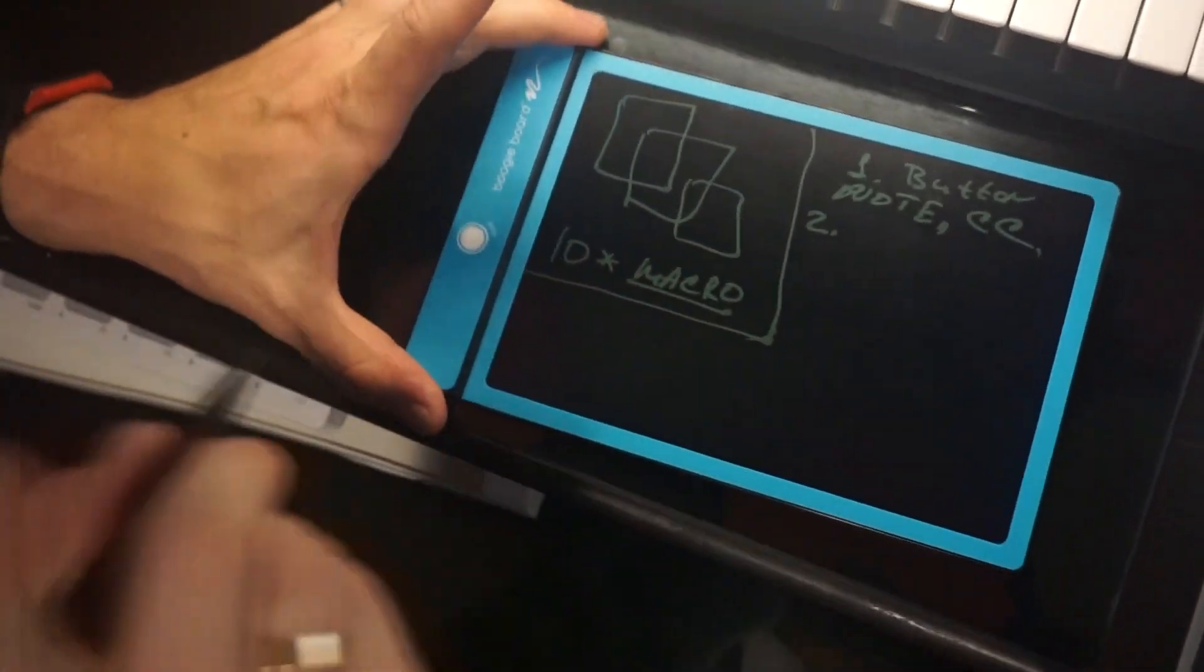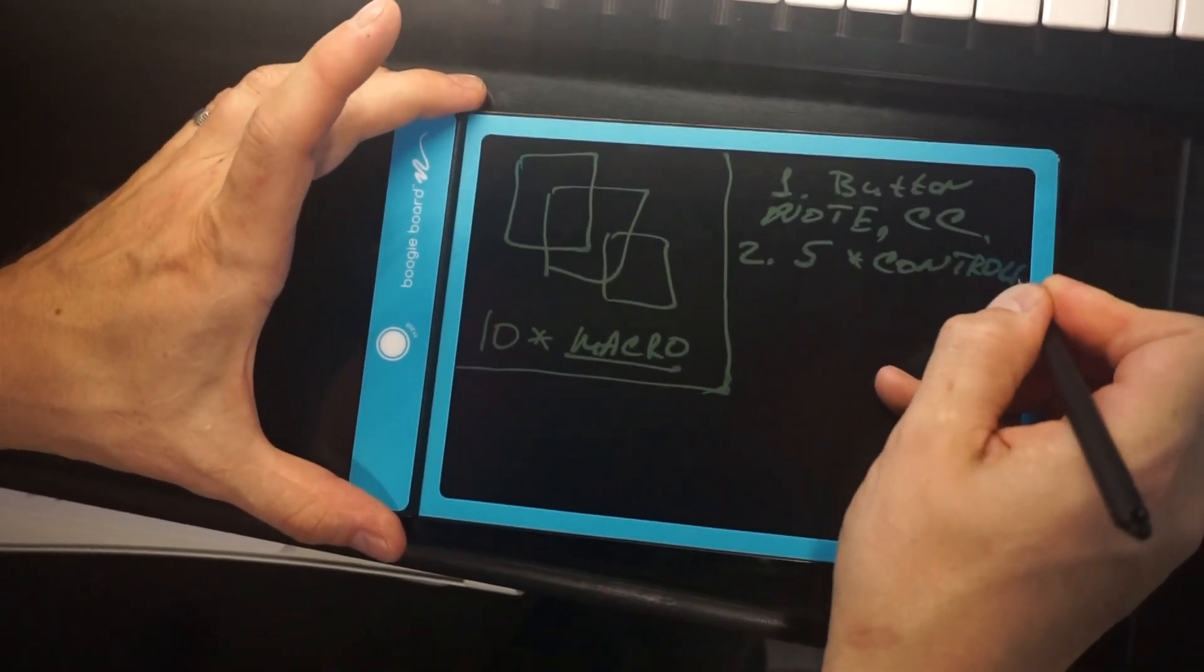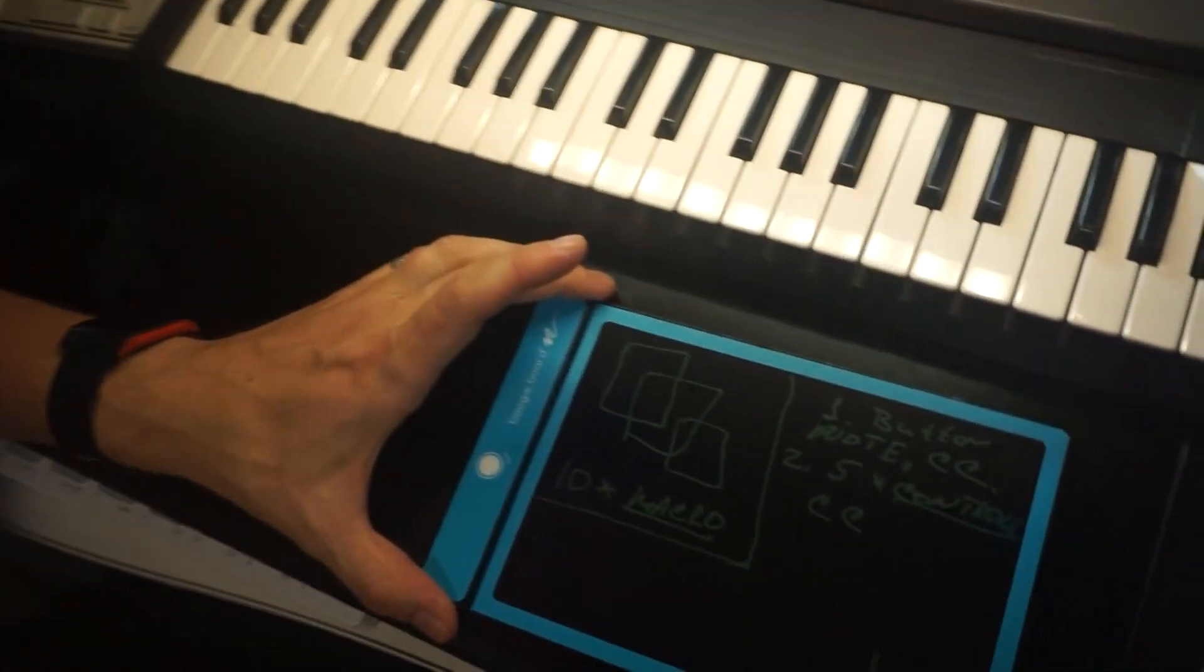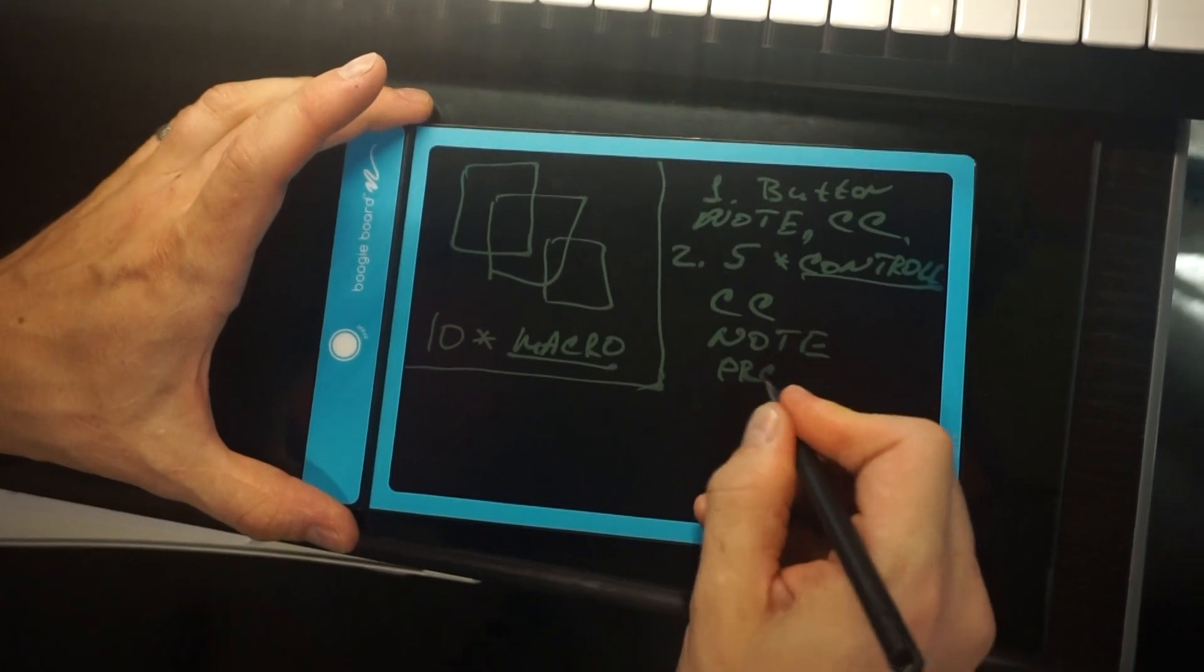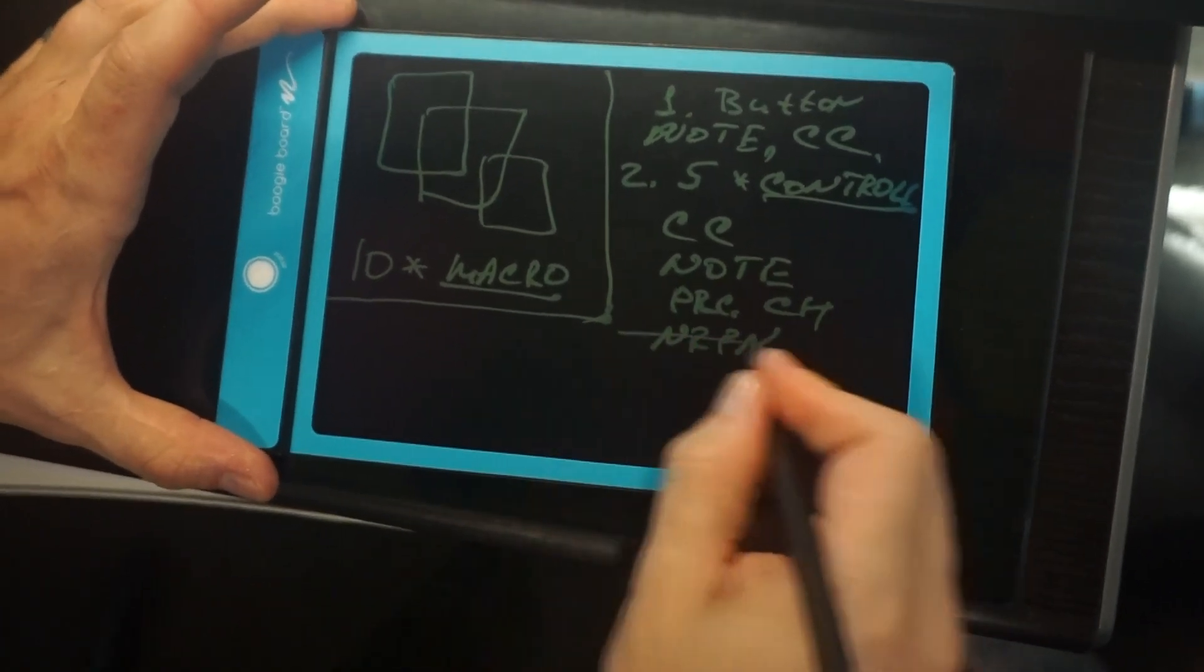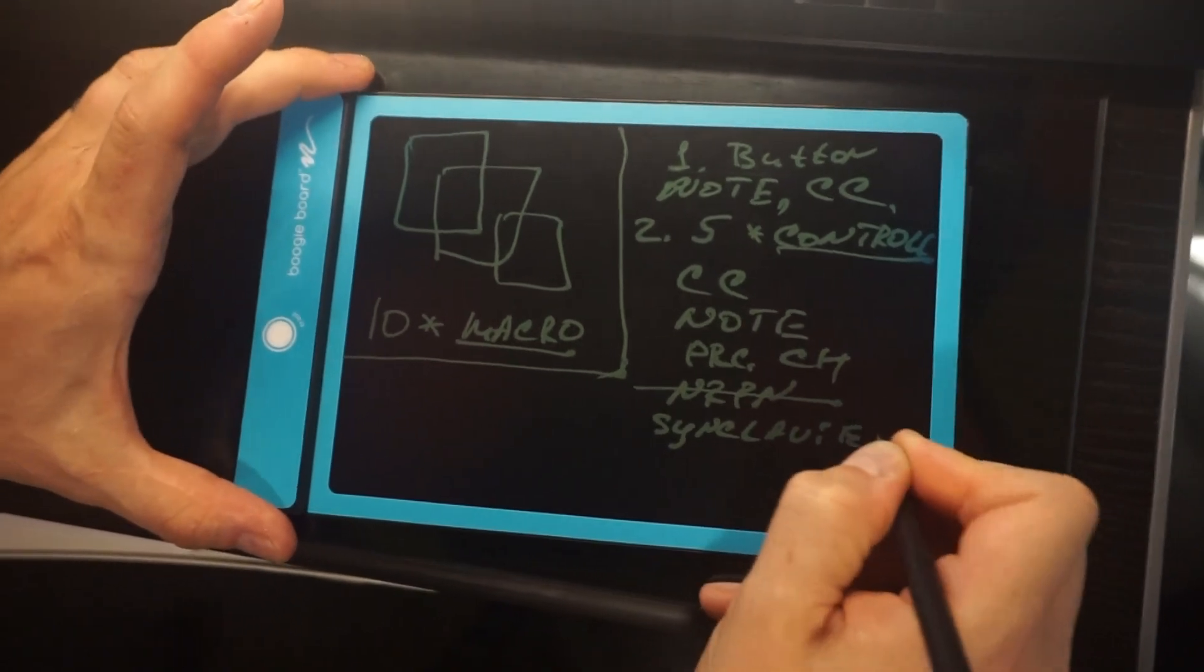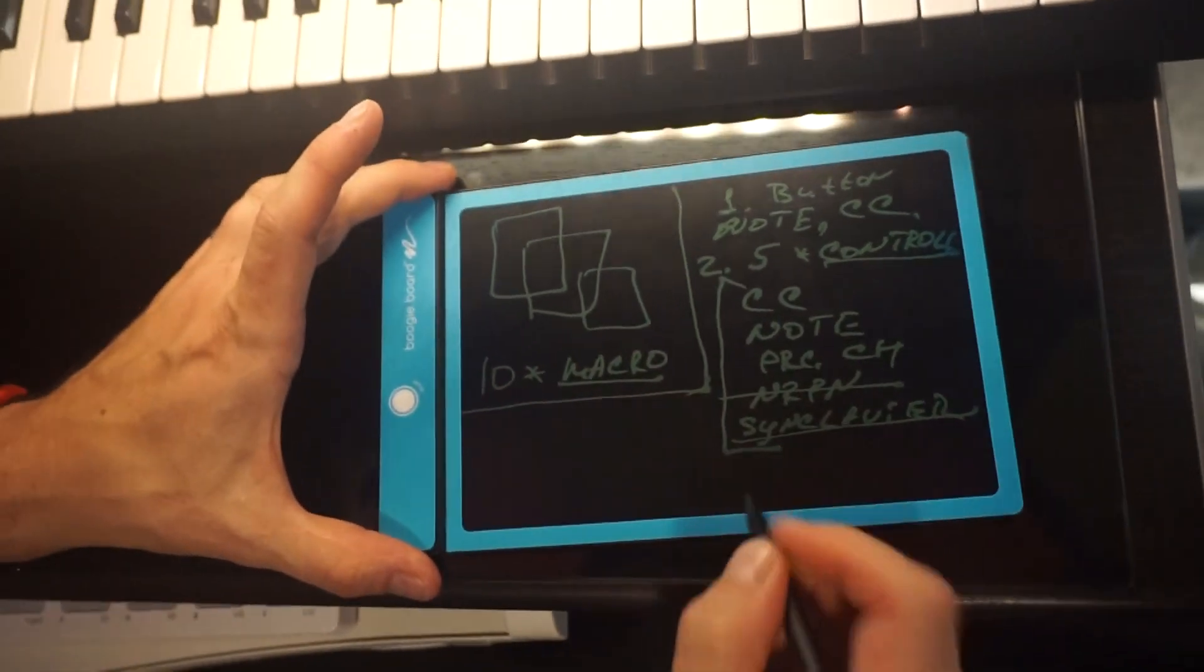And then we have five controllers. What means controller? Basically controller is a parameter that can send different types of parameters at the same time. So every controller can send CC message. It can send note messages. It can send program change message. It can change, it can send an RPN. Oh wait, sorry, it's not yet implemented. It will be implemented later. And finally, it can work in a Synclaviar mode, which is a way to run Synclaviar Go application for iPad or iPhone. Anyway, this is what we have per controller.